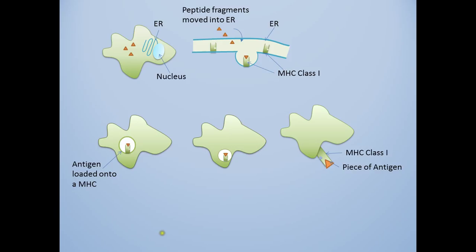All nucleated cells are able to process endogenous antigens in this manner, acting as an APC using an MHC class I molecule for antigen display.